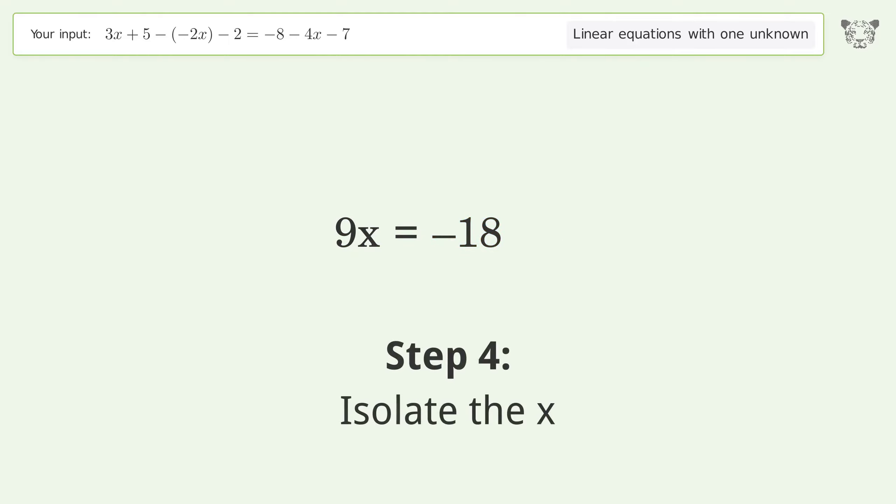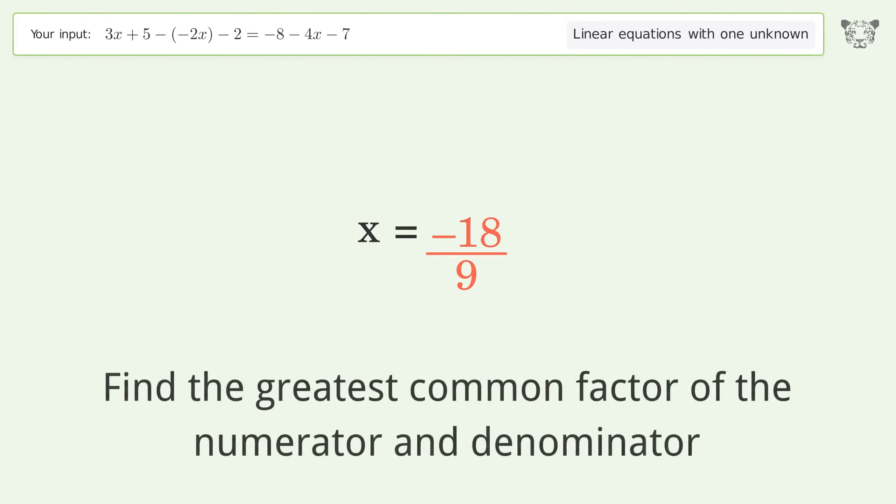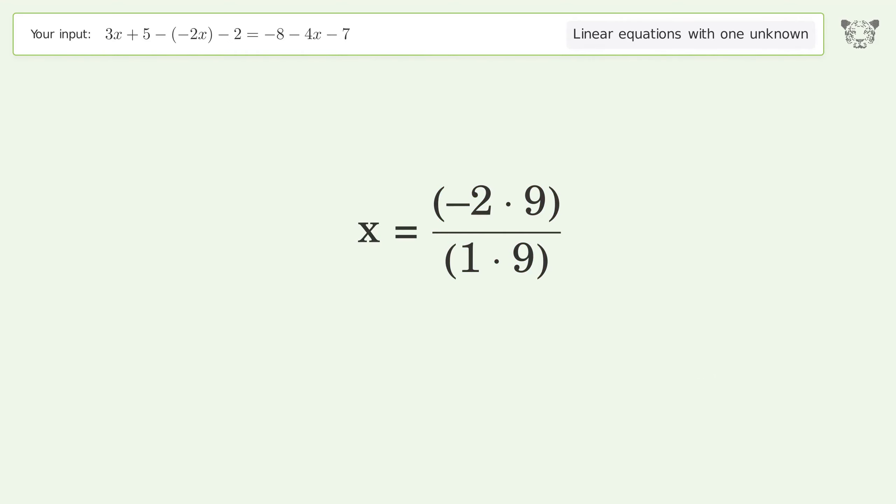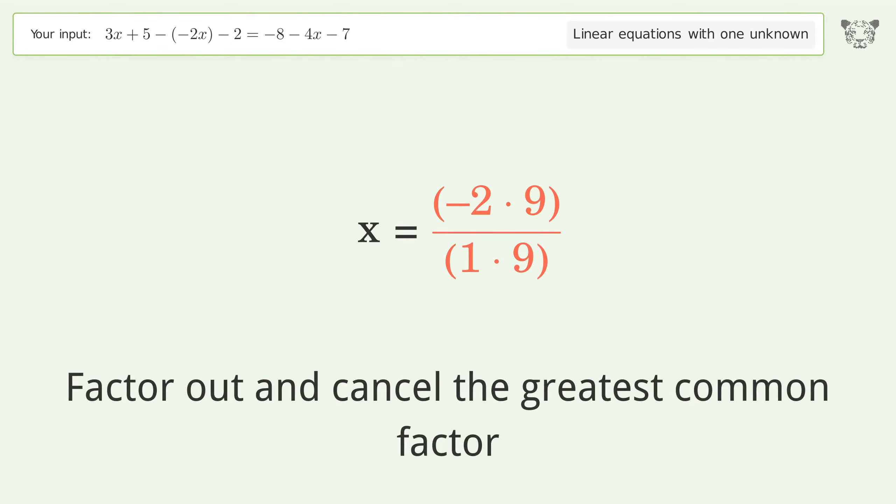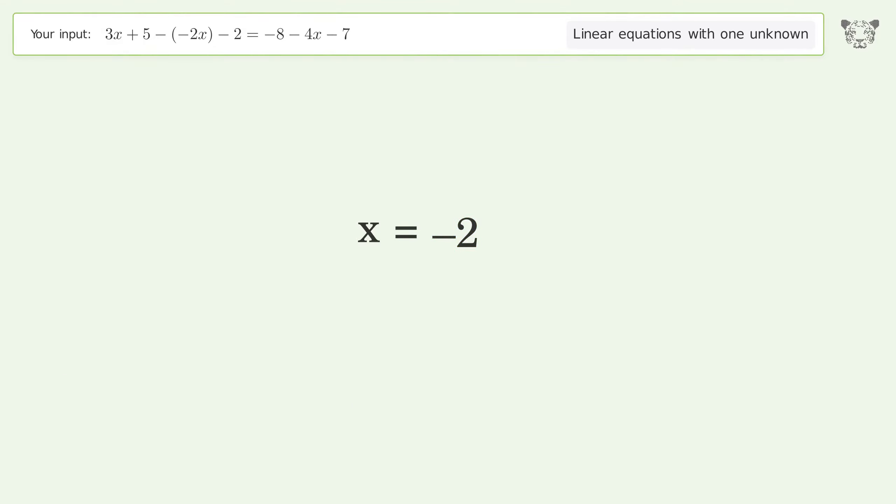Isolate the x. Divide both sides by 9. Simplify the fraction. Find the greatest common factor of the numerator and denominator. Factor out and cancel the greatest common factor. And so the final result is x equals negative 2.